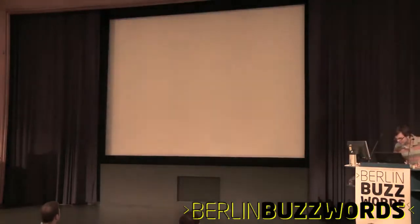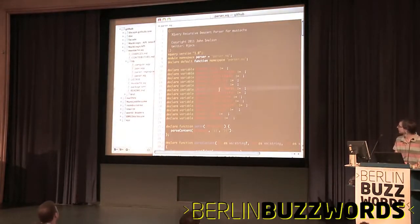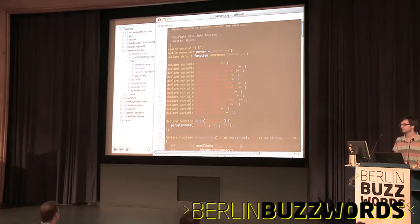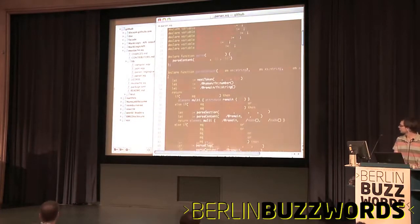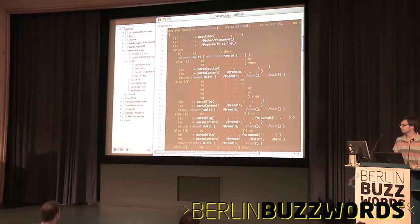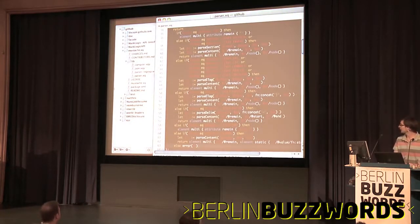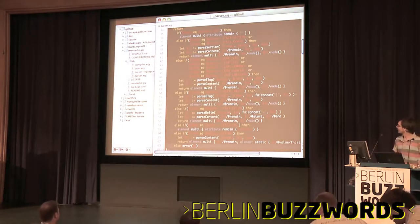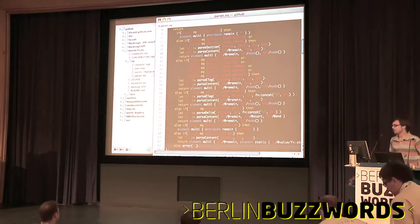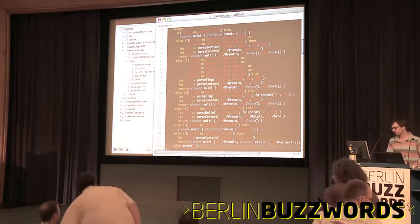Let me just show you how it looks. This is actually some XQuery code — a parser for Mustache. Who here has used Mustache? For whoever used it, this is how you write a proper parser in XQuery to do Mustache, which shows it's actually a little more advanced than what you would expect in SQL. It allows you to do a little bit more things. It might not be perfect, but it's a little better for unstructured information, at the very least.